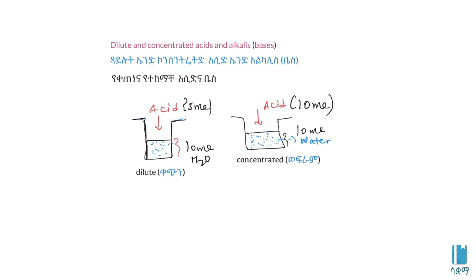The first beaker is a concentrated solution, while the second beaker is a dilute solution. So the two acid beakers — one is dilute, one is concentrated — depend on how much solvent (water) and solute (acid) are present. Dilute means relatively less solute; concentrated means relatively more solute.